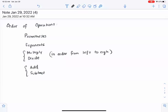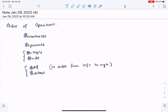Order of operations: you start with parentheses, exponents, then you multiply and divide in the order they appear from left to right, add and subtract in the order they appear from left to right.